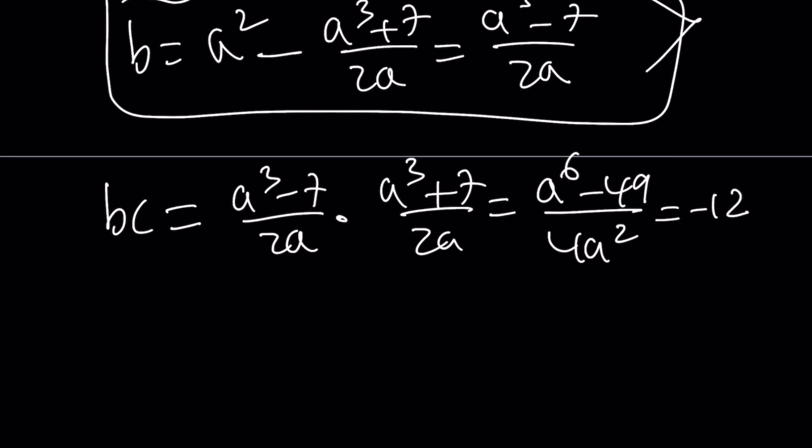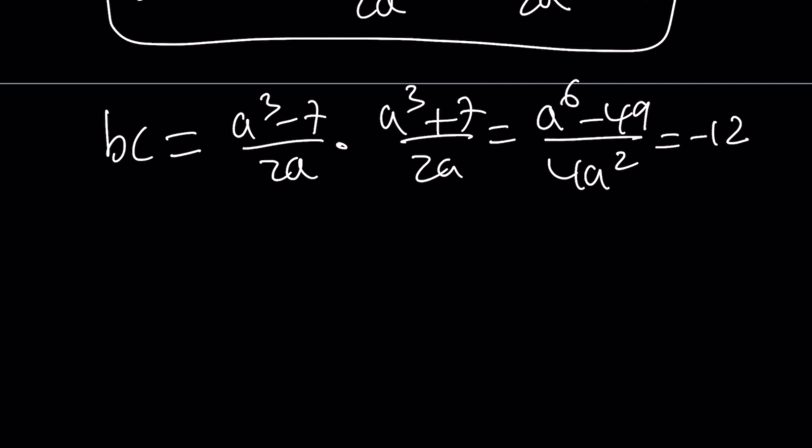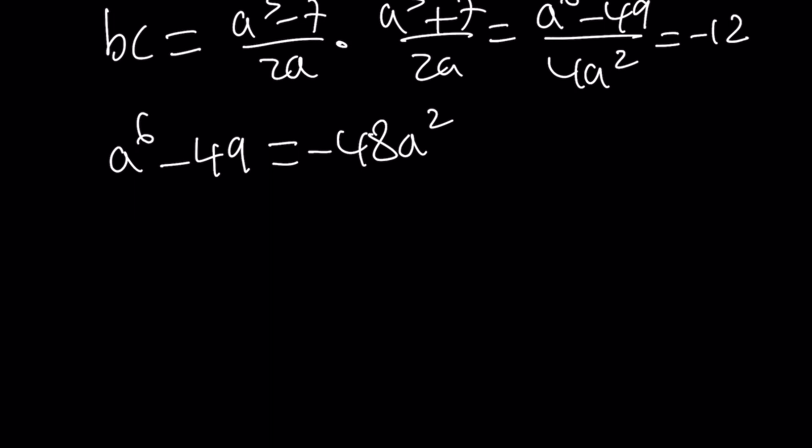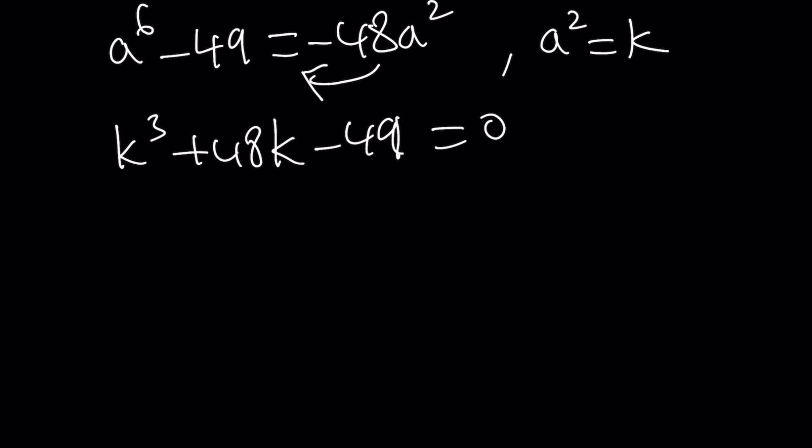So this is equal to negative 12. I know this kind of looks messy and 6 power is like what, but don't worry about it because we're going to solve this and it's going to be very easy. Cross multiply, put everything on the same side. And here I can do a little substitution. a squared, let's call that k just for fun. You're going to get k cubed plus 48k minus 49 equal to 0. The sum of the coefficients in a polynomial is 0, so that means k equals 1 is a solution. But k is a squared, therefore you get two solutions: a equals 1 or a equals negative 1.